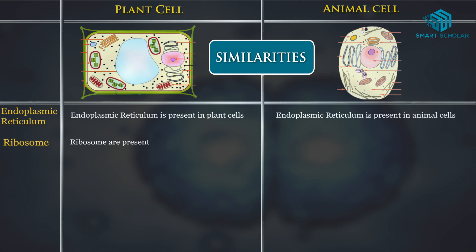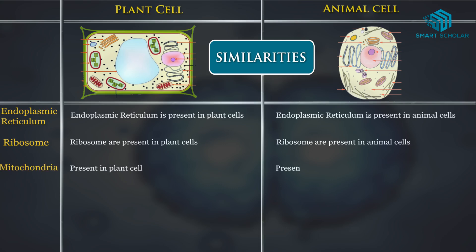Ribosomes are present in plant cells, and in the same way, ribosomes are present in animal cells too. Mitochondria is present in plant cells, and in the same way, it is present in animal cells too.